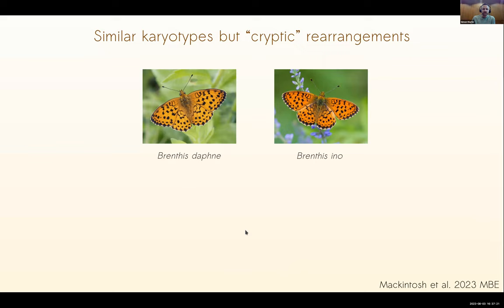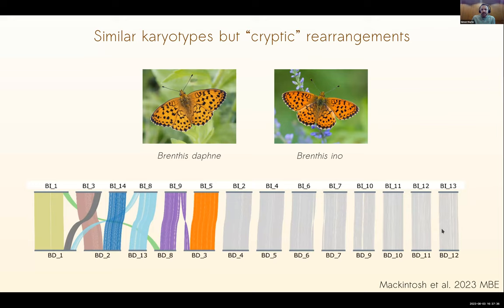Alex studied two species of fritillaries - Brenthis daphne and ino. They have a very reduced chromosome number and differ not too much in chromosome number - only by one chromosome - but in chromosome structure there are five chromosomes that are rearranged between the two species involving multiple fission and fusion events. Alex wanted to know whether these events result in stronger species barriers on these rearranged chromosomes.